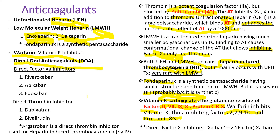Direct oral anticoagulants have two kinds: direct factor 10a inhibitors and direct thrombin inhibitors. Direct factor 10a inhibitors include rivaroxaban (trade name Xarelto), apixaban, and edoxaban — the 'xa' meaning factor 10a and 'ban' meaning inhibiting. Direct thrombin inhibitor has a commercially available drug by the name of dabigatran, trade name Pradaxa. Argatroban is also a direct thrombin inhibitor, but it is used for heparin-induced thrombocytopenia; because it is given IV, it is not suitable for long-term use.